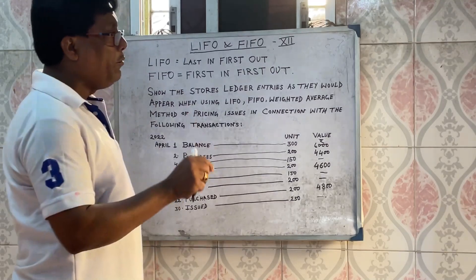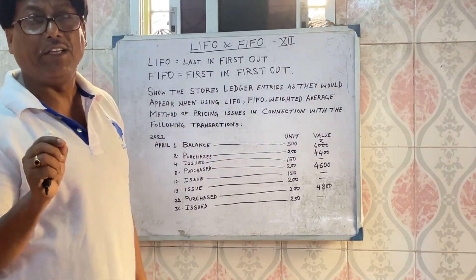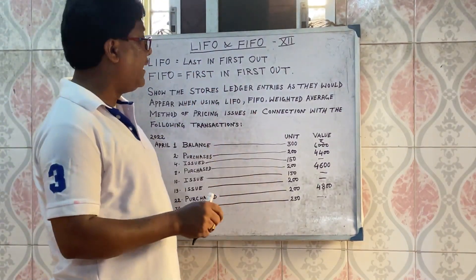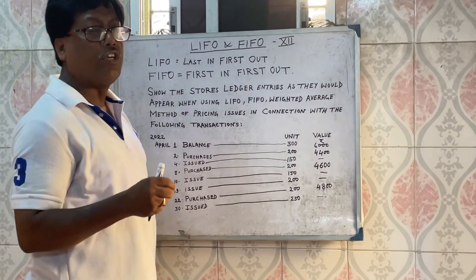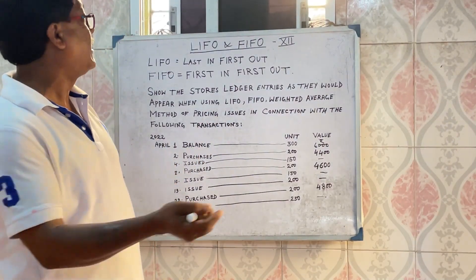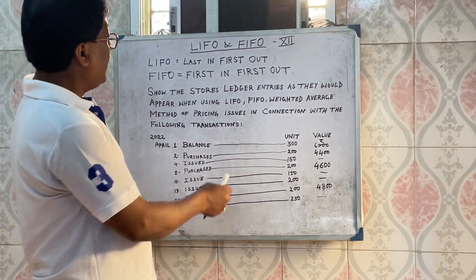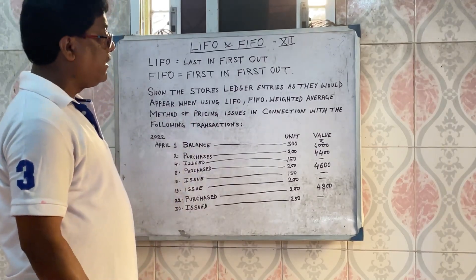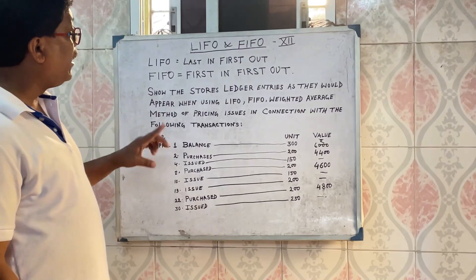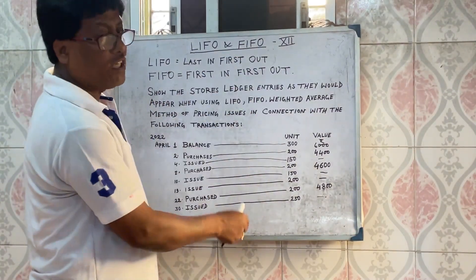When I was talking about LIFO method — last in, first out — it was actually an unscientific method. Because the goods last in, I was talking about the first year and the goods that I was talking about. I was talking about the LIFO method, which is an unscientific method.